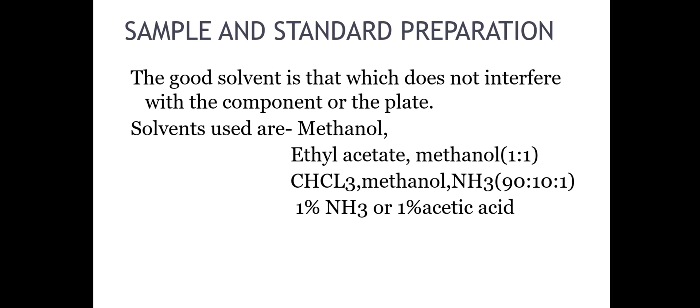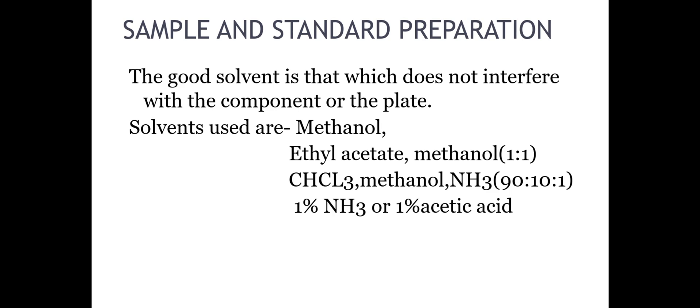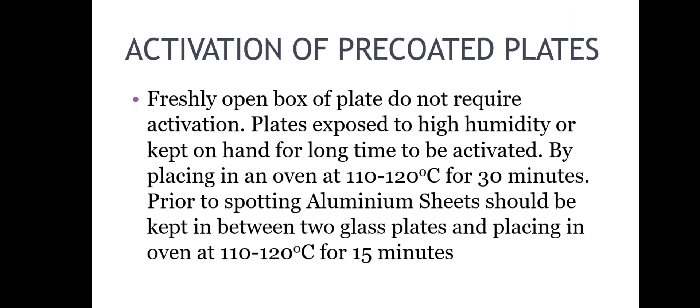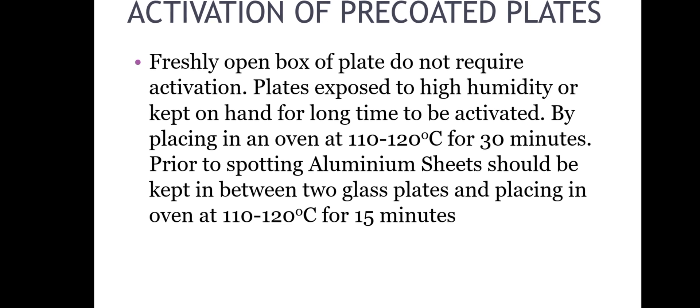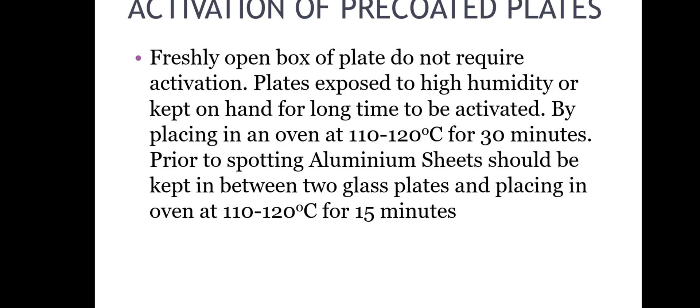For sample and standard preparation, a good solvent should not interfere with the component or the plate. Solvents used include methanol, ethyl acetate:methanol (1:1), and chloroform:methanol:ammonia (90:10:1) with 1% ammonia or 1% acetic acid. For activation of precoated plates, freshly opened plates do not require activation, but plates exposed to high humidity need activation by placing in an oven at 110–120°C for 30 minutes; aluminum sheets should be kept between two glass plates and heated at 110–120°C for 15 minutes.